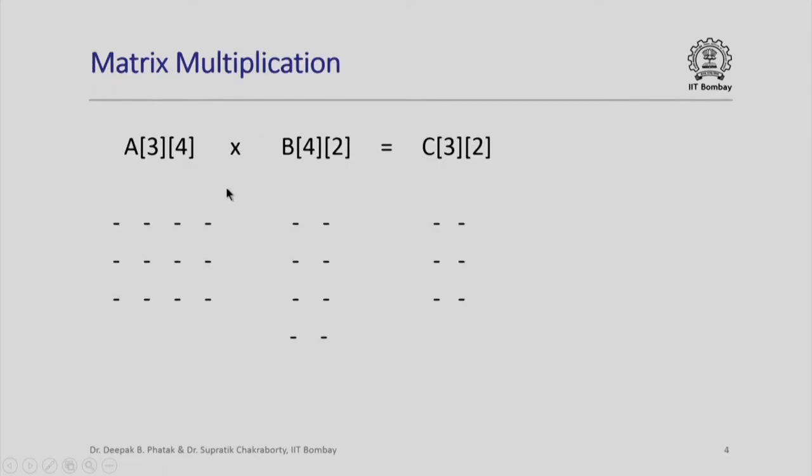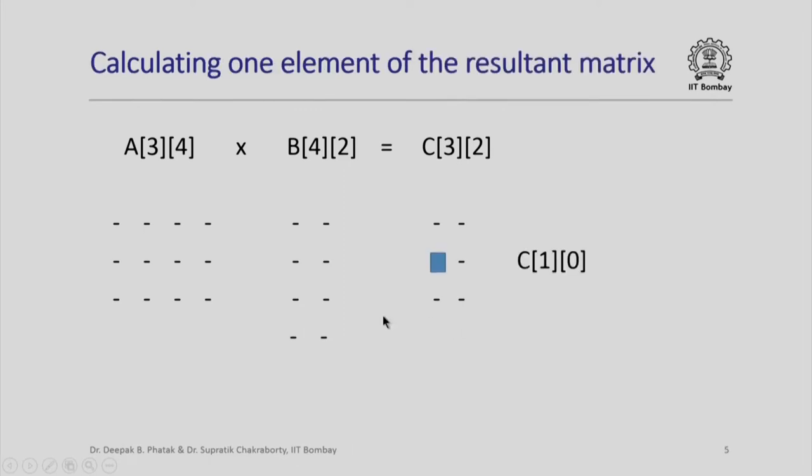First you will remember that matrix multiplication is actually a slightly involved process. Here is an example of a 3 by 4 matrix A which is to be multiplied by another matrix B which is 4 by 2. These matrices are called multiplication compatible matrices when the number of columns in the first matrix is equal to the number of rows in the second matrix. The resultant matrix peculiarly has the same number of rows as the number of rows of the first matrix and the same number of columns as the number of columns in the second matrix. The multiplication operation is involved in that every element of the C matrix is actually calculated using several elements of A and several elements of B.